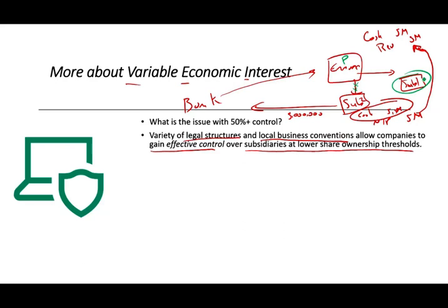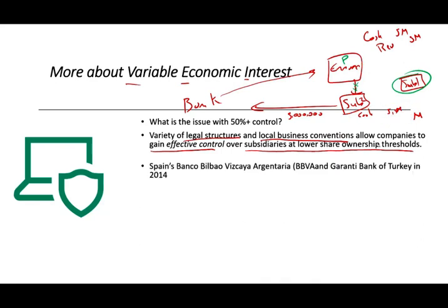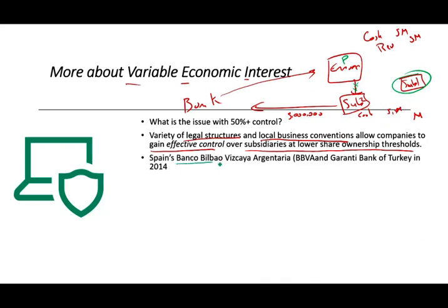Sub 2 would also borrow money, then buy bad assets or investments from Enron, and Enron would sell those at a profit. Spain's Banco BBVA bought a bank in Turkey and owned only about 39% of shares — less than 50% — but in reality they controlled the bank through other measures, such as the ability to select the board of directors. So that's why the percentage is important, but sometimes we have to see who really controls the entity.